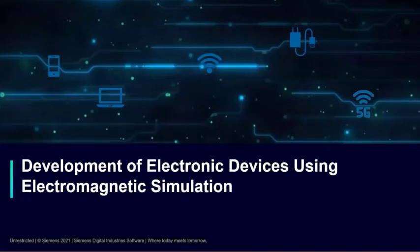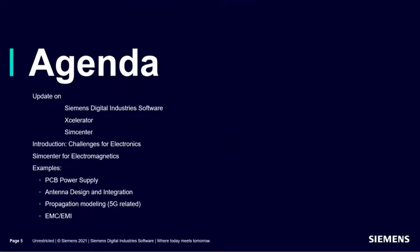Hello, everyone. In today's webinar, I will be talking about electromagnetic simulation, primarily 3D, for electronic devices. Let me give a brief overview on what we have on our agenda today. I will give first an update on Siemens Digital Industry software, specifically the Accelerator portfolio and the SimCenter portfolio. Then I will discuss some challenges specifically for electronics and how these are linked to electromagnetic simulation. I will also give an overview on our solutions for electromagnetics in SimCenter portfolio, and then go through some examples: the PCB power supply, antenna, propagation modeling, and EMC-EMI.